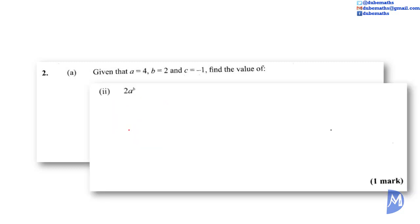2A part 2. What is 2 multiplied by A to the B power? 2 multiplied by A. A is 4, and B is 2. 2 multiplied by 4 squared. 4 squared is equal to 16. 2 multiplied by 16. 2 multiplied by 16 is equal to 32.